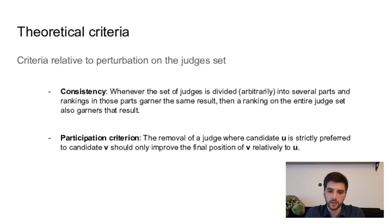The participation criterion says that if you remove a judge that strictly prefers the candidate U over the candidate V, it should only improve the final position of V relatively to U. So in another word, if a function does not satisfy the participation criterion, then a judge, so a dataset or a task, can go against its own preferences of algorithms and would rather not participate in the evaluation, which is really not what we want.